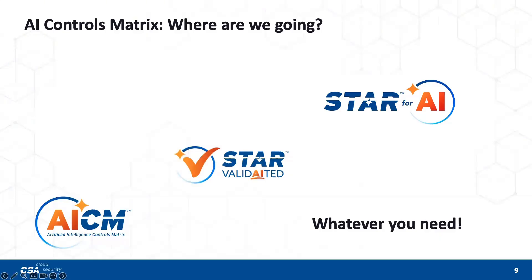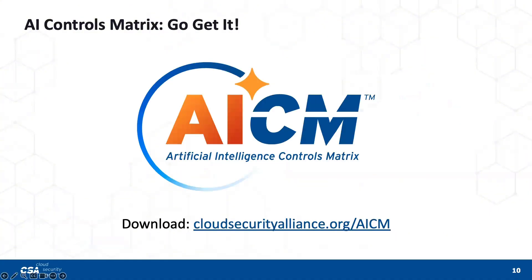I want to thank everyone who's been part of this journey to create this. We're going to extend it further — we think we can do more in highlighting very important, even catastrophic risks and the controls that can best deal with them. We've developed something called STAR Validated, which actually uses AI to perform assessment and audit activities and score assessment material. We'll apply that to this. Ultimately, this is going to be part of our STAR for AI, where we've extended our STAR program to do certification and assurance for AI systems, just as we have for cloud. We'd love to hear from you about what you think — go download it and use the controls. Thank you.